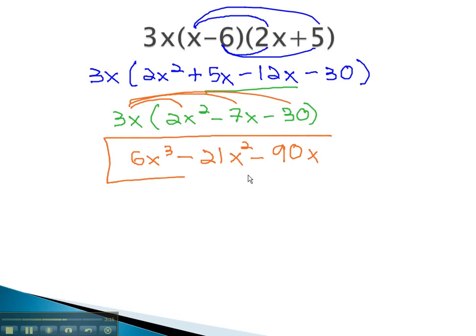6x cubed, minus 21x squared, minus 90x, becomes our solution.